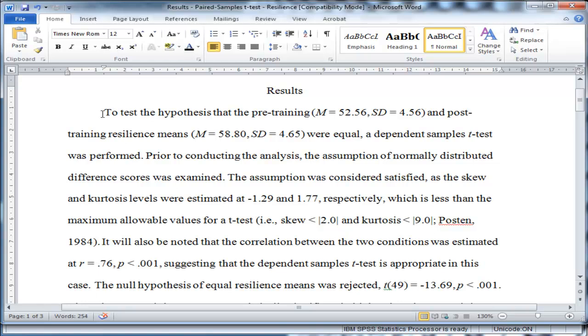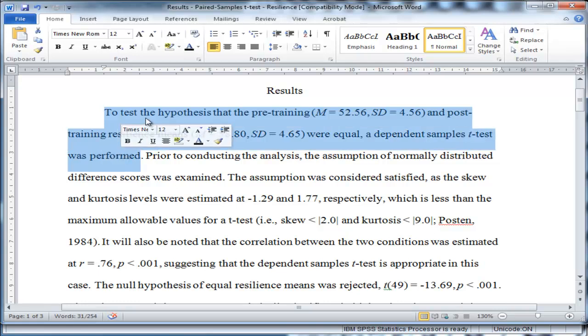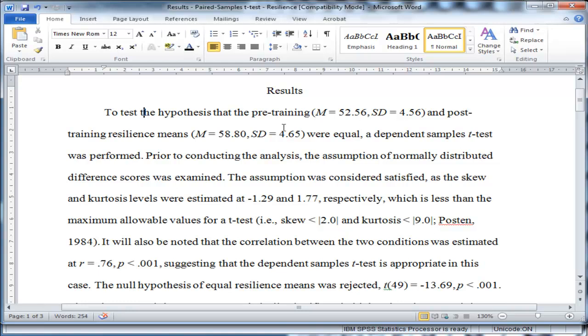So the first statement is, like most results sections, something relevant to the descriptive statistics. So to test the hypothesis that the pre-training and post-training resilience means were equal, a Dependent Samples t-test was performed. So you're telling the reader what analysis you're going to do, or what analysis you've done, and you give them an indication of the results in terms of the descriptive statistics.